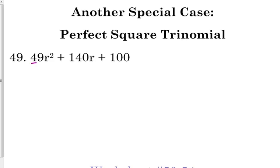Alright, this time we have three terms. The first one and the last one are perfect squares. 49 is 7 squared, 100 is 10 squared.